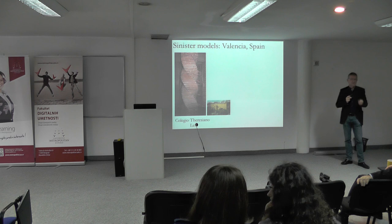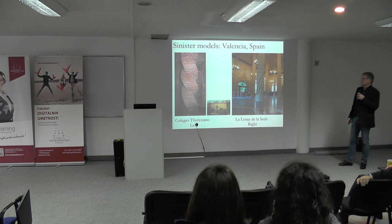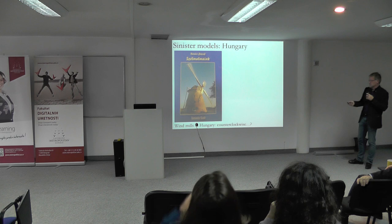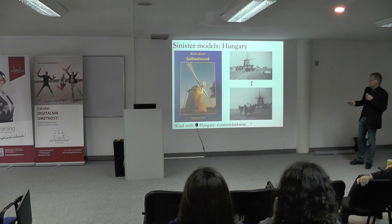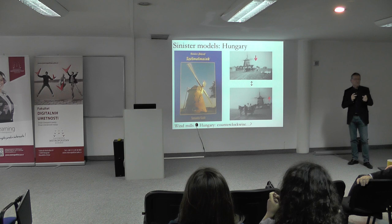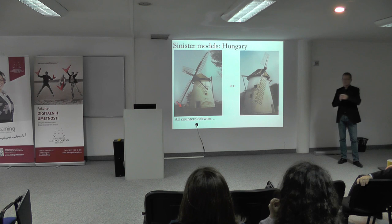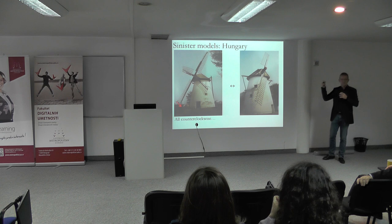Some examples from Spain, where I gave this talk and people reacted by giving me some examples. You have this example turning this way in the Colegio Teresiano, and this example in the La Lonja de la Seda — and you see it's the opposite. This is from Hungary. You can see that the windmills turned this way, but there was a book about windmills in Hungary, and I noticed that one windmill turned the wrong way. This book contains maybe 200 windmills, and one of them turned the wrong way. They figured out it was actually a mistake — the picture was turned upside down. But the thing is, why don't you notice it?